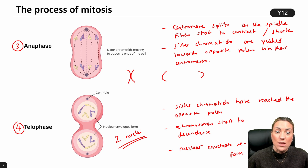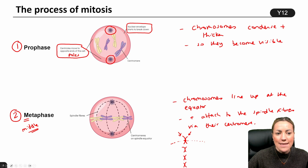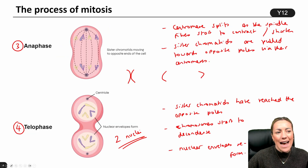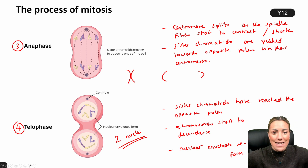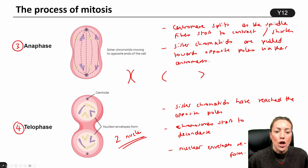Then we need to go into cytokinesis, where we actually get cell division. Let's quickly recap: prophase — centrioles move to the opposite poles, nuclear envelopes break down, chromosomes condense and thicken and become visible. Metaphase — the chromosomes line up at the equator and are attached to the spindle fibres by their centromere. Anaphase — the centromere splits and the individual sister chromatids are pulled to the opposite poles using the spindle fibres. Telophase — the chromosomes start to decondense and the two nuclear envelopes reform, giving two genetically identical nuclei.